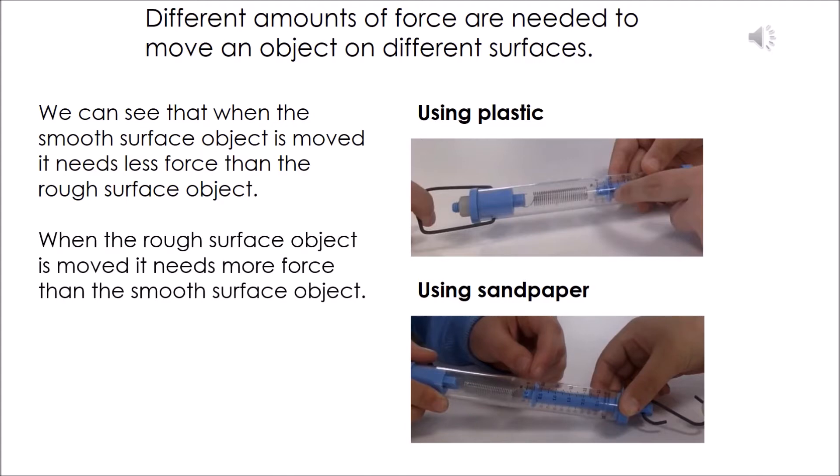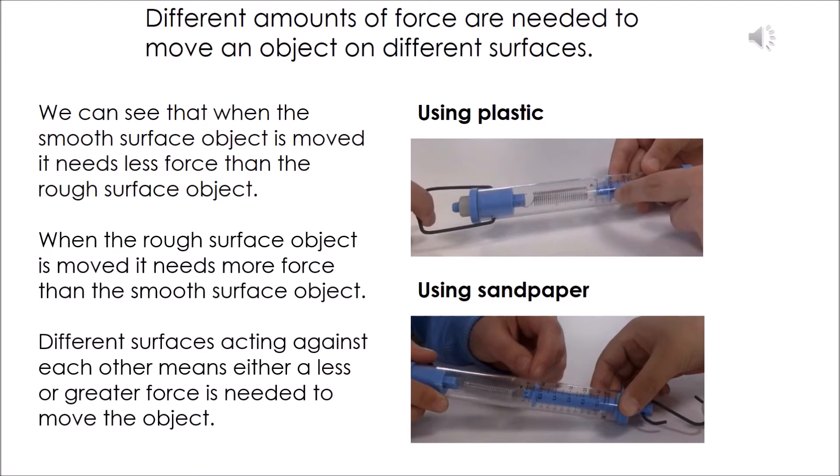When the rough surface object is moved, it needs more force than the smooth surface object. Different surfaces acting against each other means either a less or greater force is needed to move the object.